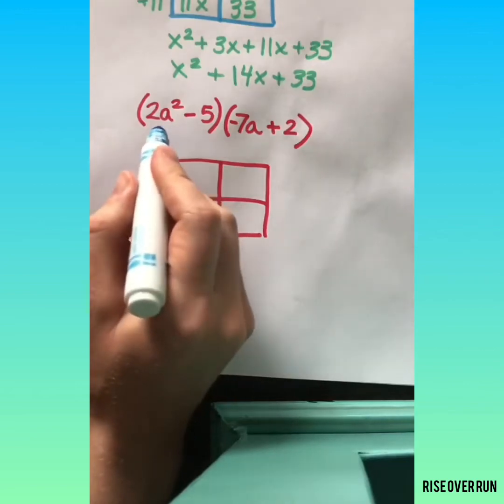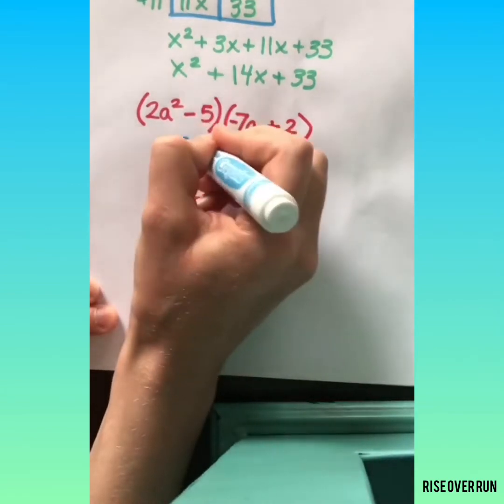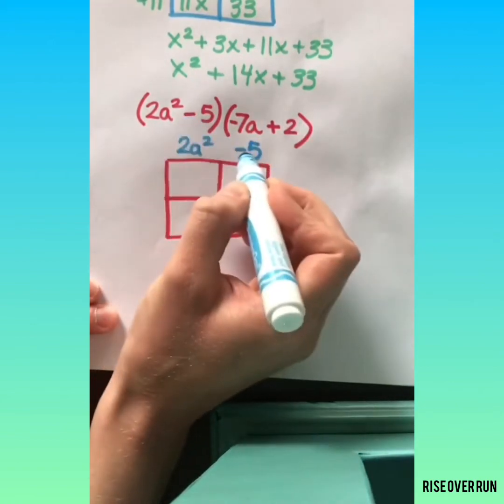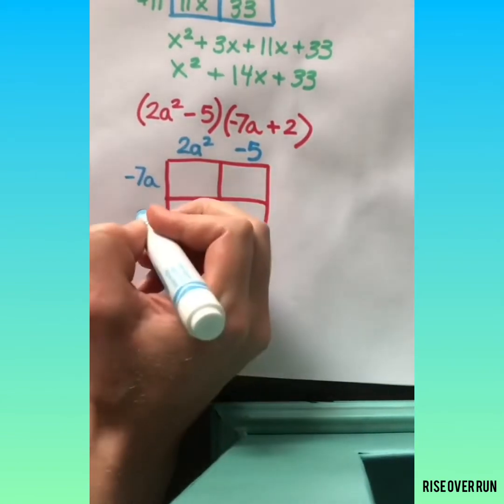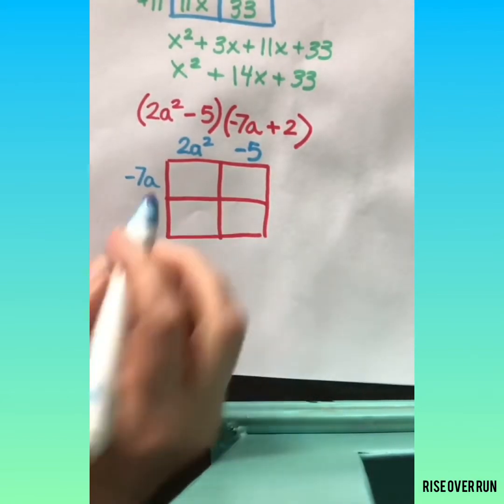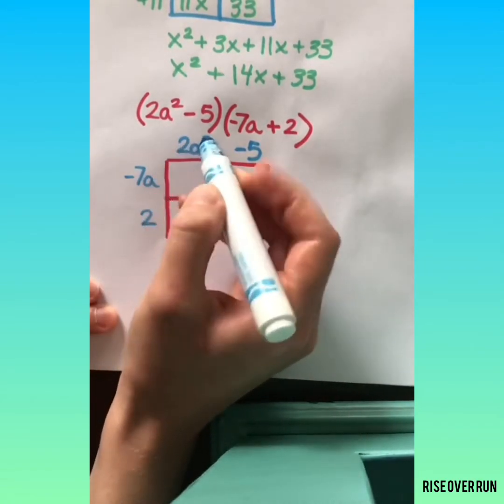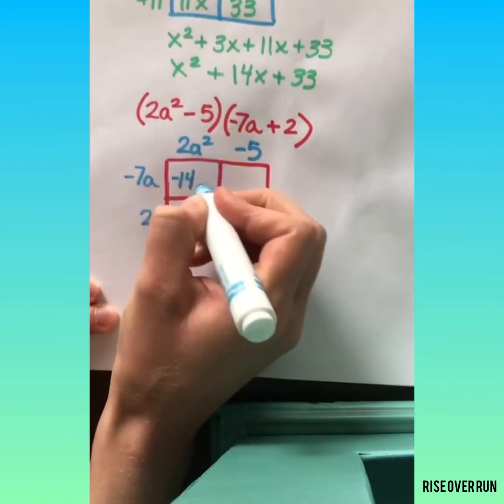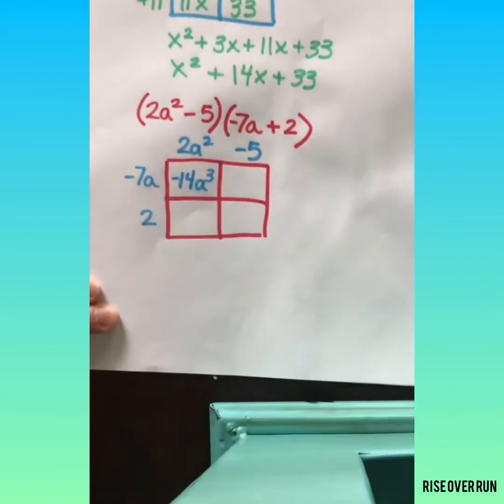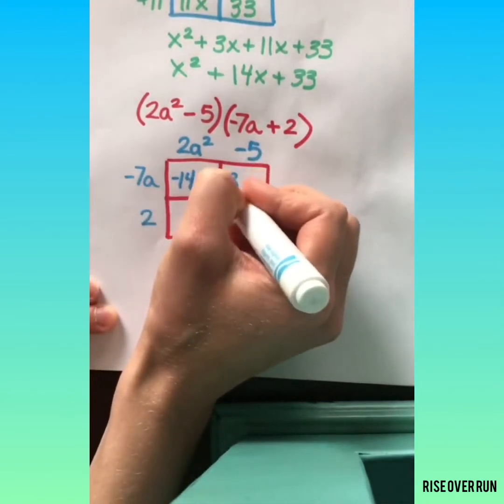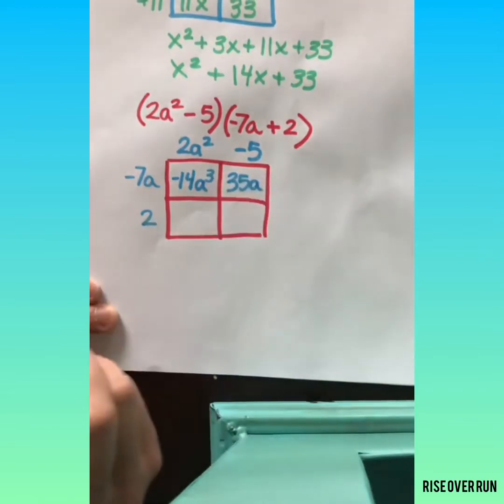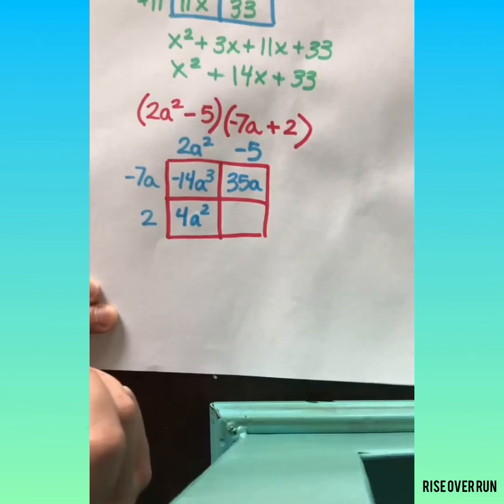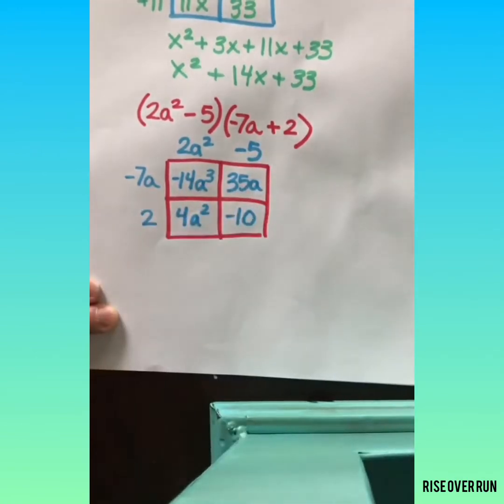Let's set up an area model for these. 2a squared. Be sure you're paying attention if you ever have a negative or a minus. Negative 7a times 2a squared. Multiply the coefficients and then watch out for the exponents here. Negative a times negative 5 is a positive 35a. 2 times 2a squared is 4a squared. 2 times negative 5 is negative 10.